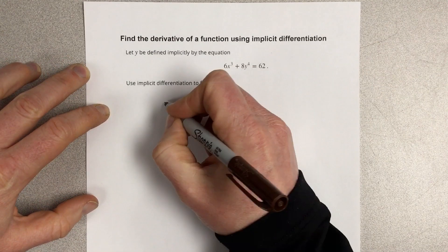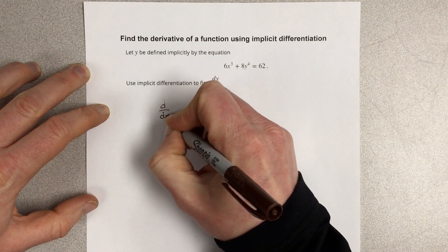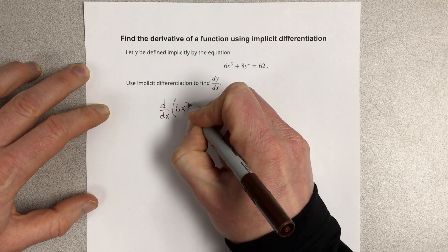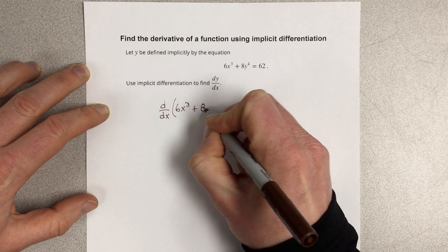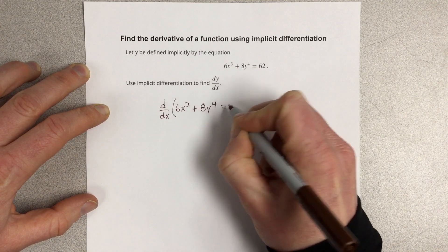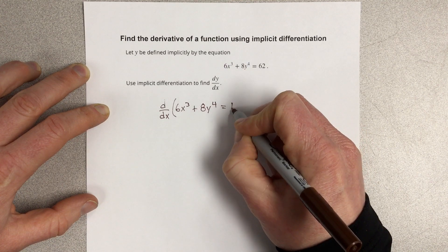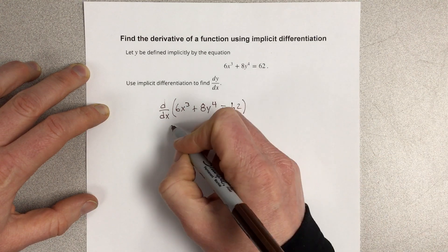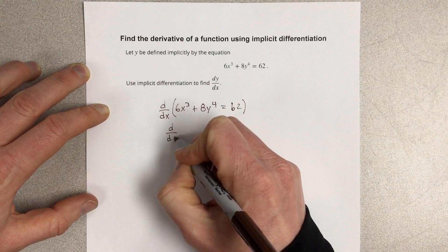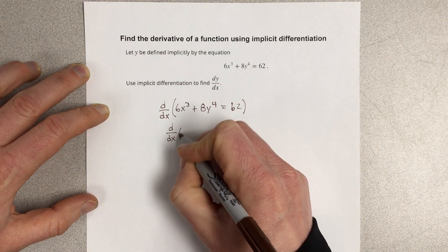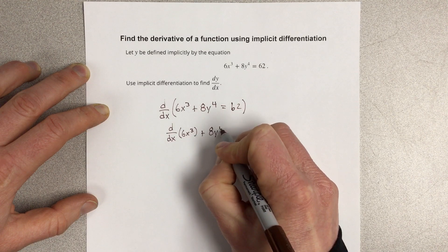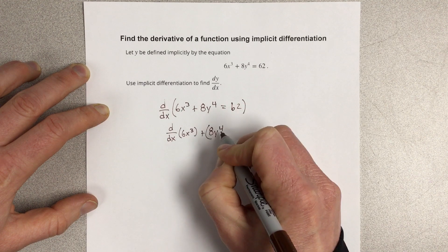We're going to say derivative with respect to x of 6x³ + 8y⁴ equals the derivative with respect to x of 62. When I split that up, I would have the derivative of 6x³ with respect to x plus the derivative of 8y to the 4th.